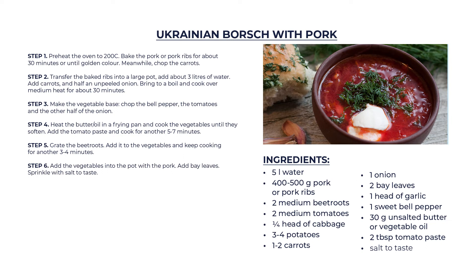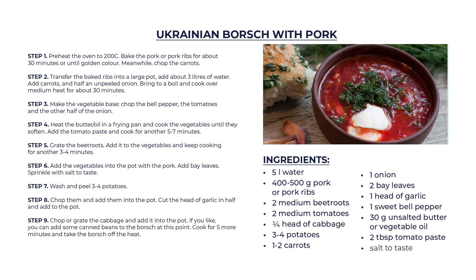Step 6: Add the vegetables into the pot with the pork. Add bay leaves. Sprinkle it with salt. Step 7: Wash and peel 3 to 4 potatoes. Step 8: Chop them and add them into the pot. Cut the head of garlic in half and add to the pot. Step 9: Chop or grate the cabbage and add it into the pot. If you like, you can add some canned beans at this point. Cook for 5 more minutes and take the borscht off the heat. Step 10: Let it cool. Serve it with sour cream and sprinkle it with some dill.